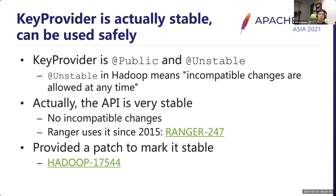When extending the Hadoop API, API compatibility is a concern. The key provider API is public but treated as unstable—meaning incompatible changes are allowed at any time. But as a matter of fact, there have been no incompatible changes since Hadoop 2.6.0 when the key provider API was introduced. Apache Ranger has also been using the key provider API since 2015. So let's make this API stable. I wrote a simple patch in HADOOP-17544, and once it is merged, you can use the key provider API without any worries.